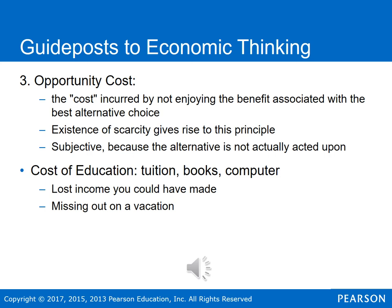Opportunity costs are subjective — there's no objective metric for opportunity cost because the alternative is not actually acted upon; it's in each individual's mind. For example, the cost of education includes books, tuition, a laptop, and the time you put in. But there's also opportunity cost: you could have earned income if you had been working instead of taking courses. Missing out on a vacation is another opportunity cost — what you're giving up to get the education.